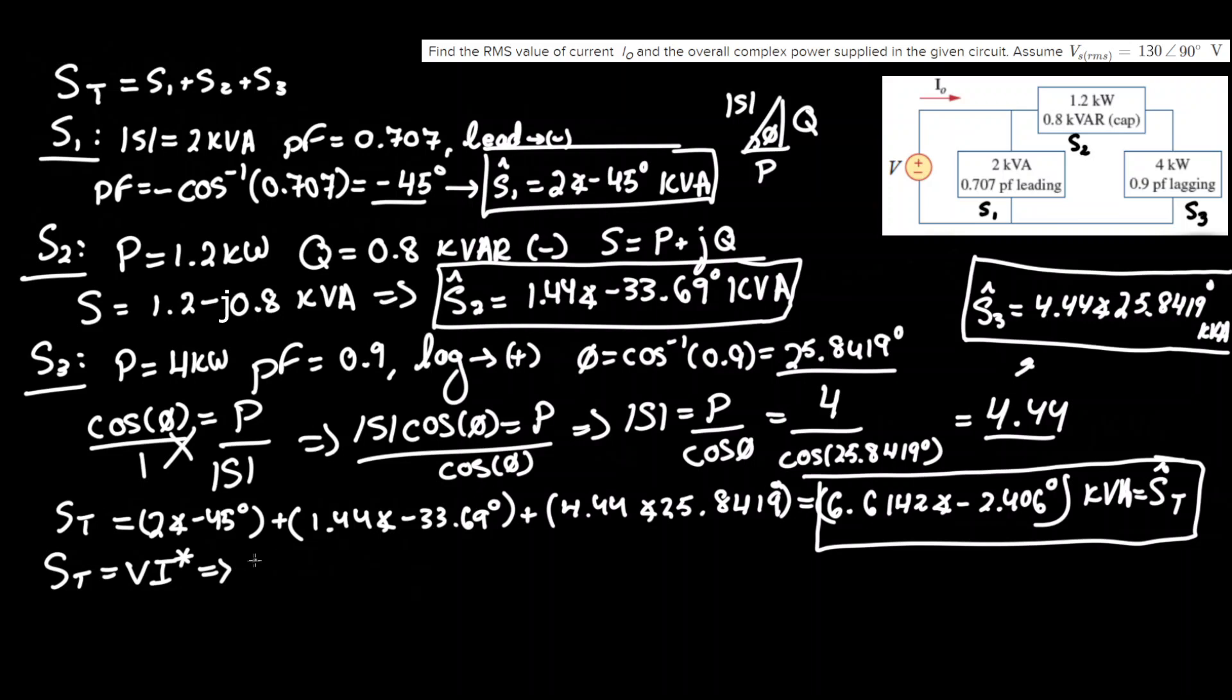And since we need to find I we isolate I complex conjugate equals S total over V, which is equivalent to, as I'll rewrite, 6.6142 angle negative 2.406 degrees and this will be in kVA, and we're putting that over our voltage source which we have here is 130 angle 90 V RMS, and we have to pay attention to the fact that it's only in volts so it would be in kV it would be 0.130 angle the same angle 90 degrees, this would just be kV, and you can call this RMS.